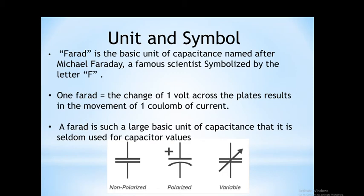The unit of capacitance is the Farad. Farad is the basic unit of capacitance named after Michael Faraday, a famous scientist, symbolized by the letter F. One Farad equals the charge of one volt across the plates resulting in the movement of one coulomb. But a Farad is a large unit, so capacitance is expressed in smaller units: microfarad, nanofarad, and picofarad.